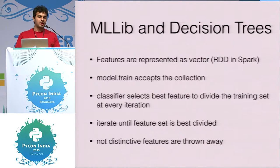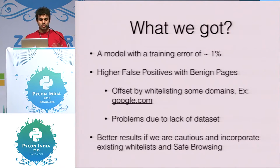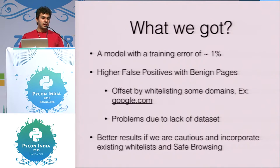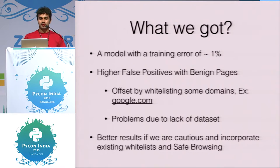The model iterates until it finds the best-fit combination of features. When trained and run on test data, it classified about 99% of web pages correctly — which seems too good to be true, and it is. In the real world, we have far more phishing pages than legitimate ones. For a Gmail login page, there's only one from google.com, but hundreds of phishing variants, so the benign dataset is much smaller than the malicious one.